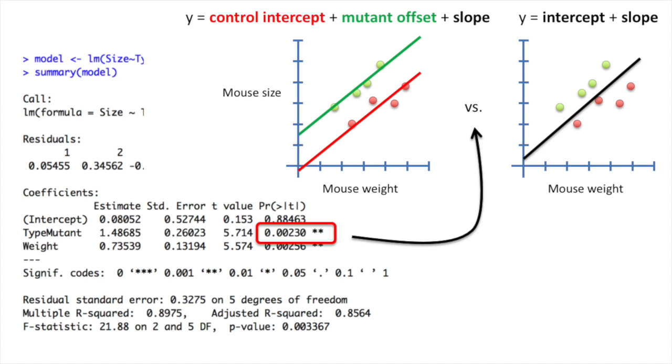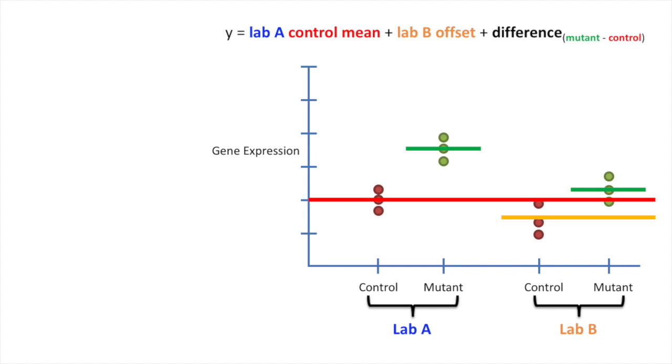So calling the linear model function actually does a bunch of different tests for us. It's important to know which test we're actually interested in. The next example shows that sometimes we're not actually interested in the p-value in the lower right-hand corner. So now let's move on to the second example. In this second example, we compared experiments done by two different labs. There was a batch effect, and we wanted to control for that.